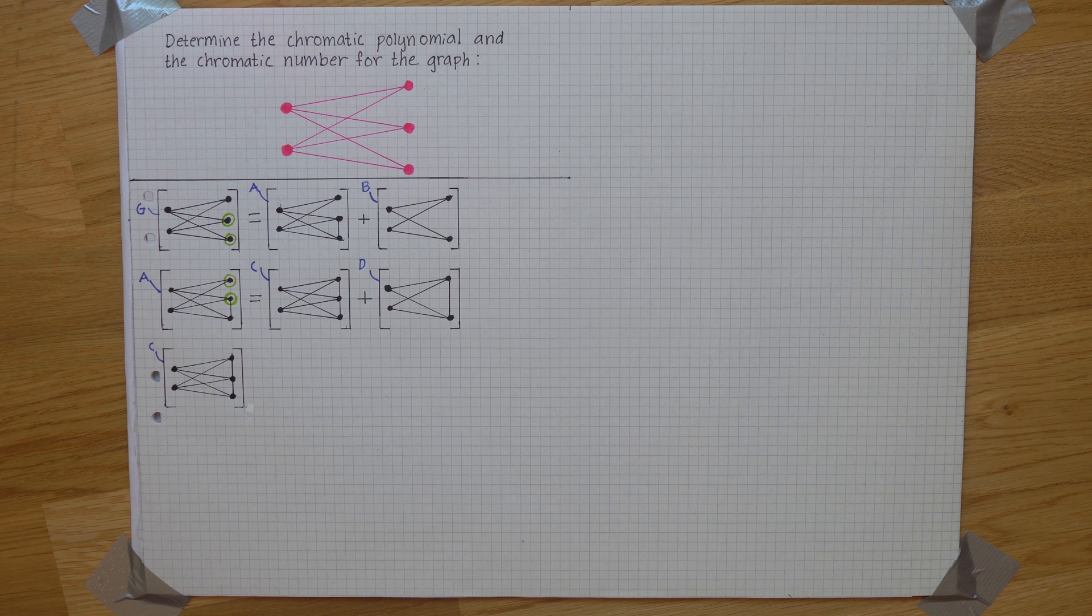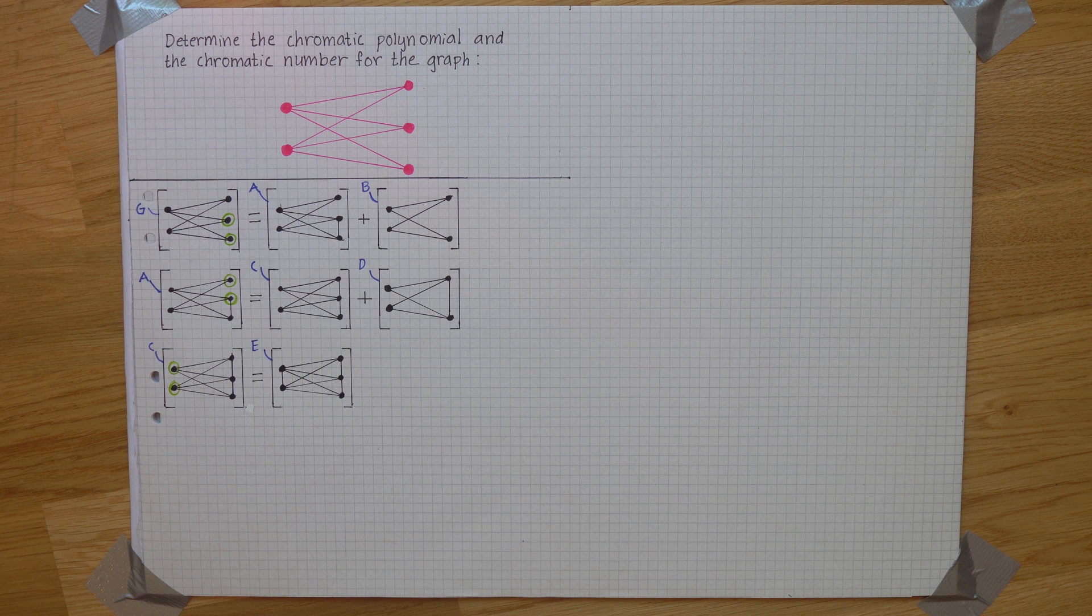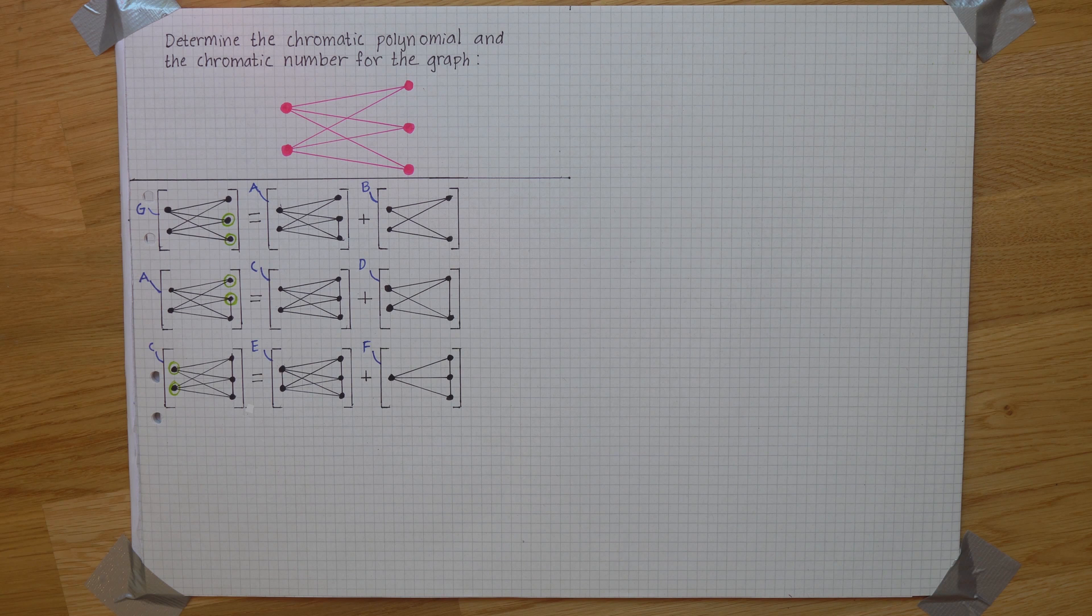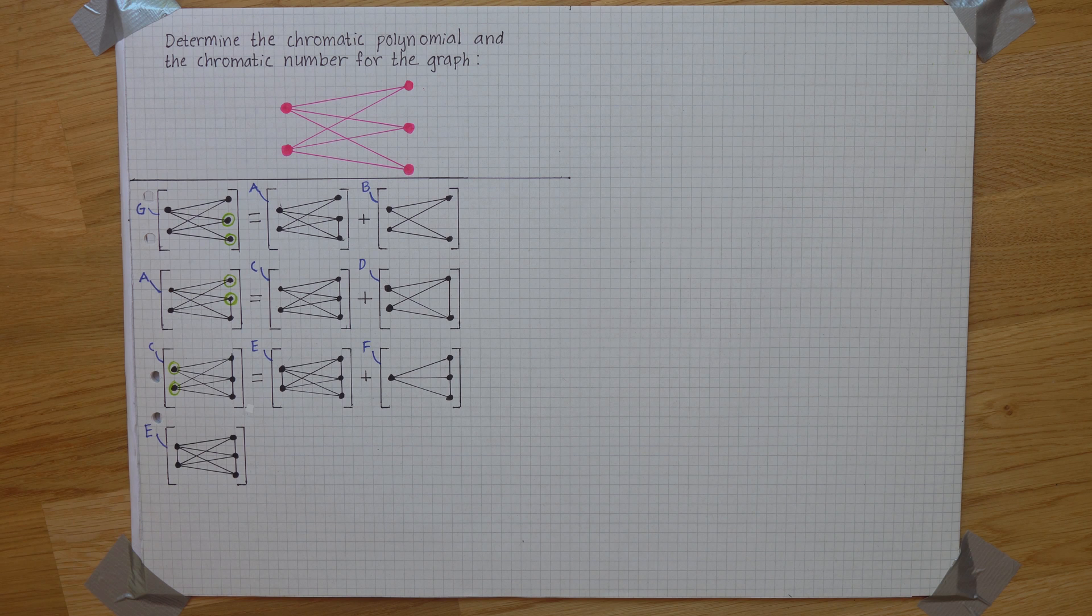And C is given the same treatment where a connection is added between two points which can be done if we then add a graph with those very same points conjoined instead. In E we almost have a situation where all nodes are connected to one another with the exception of these two.